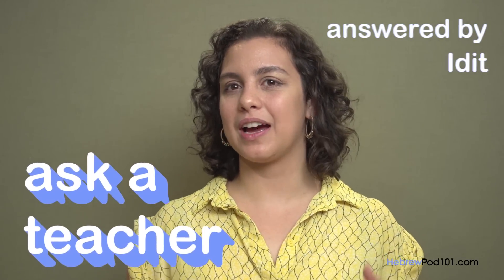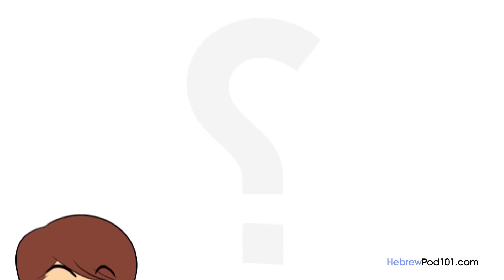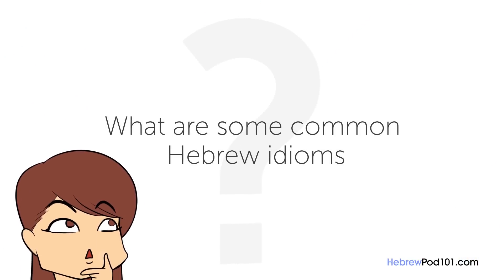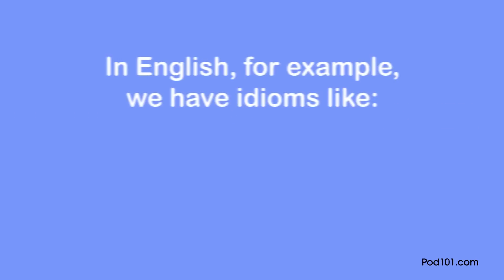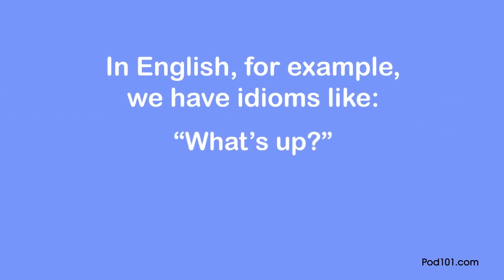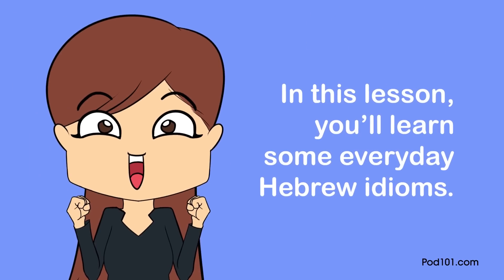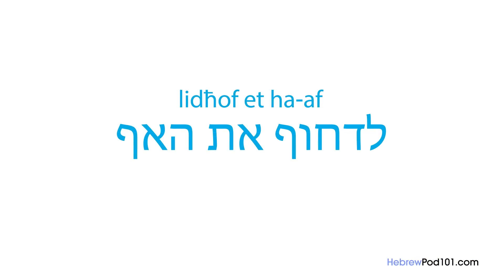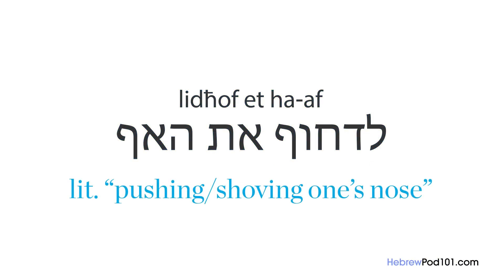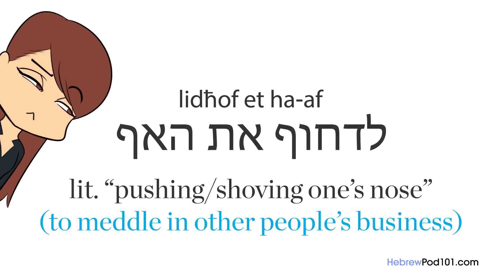Welcome to Ask a Teacher where I'll answer some of your most common Hebrew questions. The question for this lesson is: what are some common Hebrew idioms? Every language has its everyday idioms — in English we have 'what's up?' or 'it's raining cats and dogs.' The first Hebrew idiom is 'lidrhof et ha'af,' which literally means pushing or shoving one's nose — it means to meddle in other people's business.